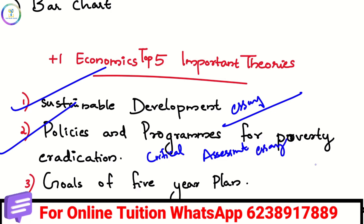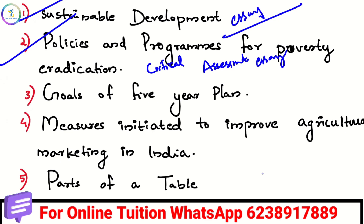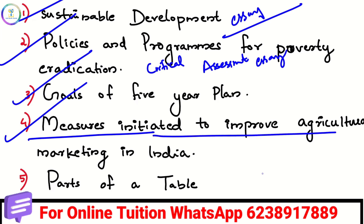Then, Goals of Five Year Plan. Five Year Plan goals are short. We will talk about 4 or 3 marks questions. We will also talk about measures initiated to improve agricultural marketing in India — how the government's measures will improve agricultural marketing.